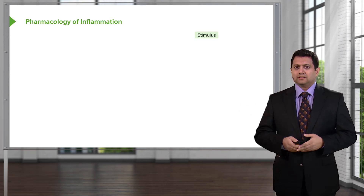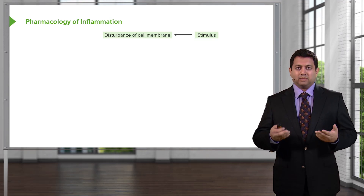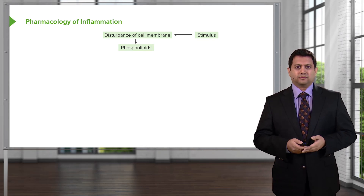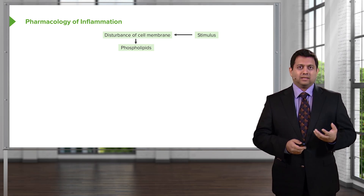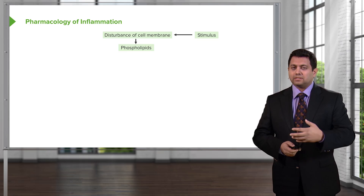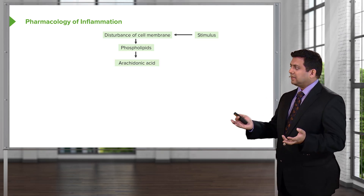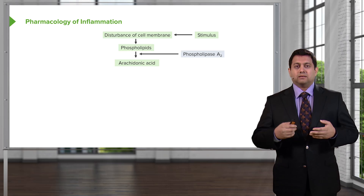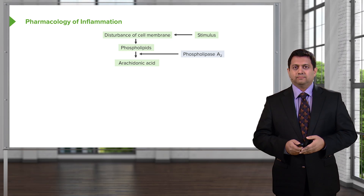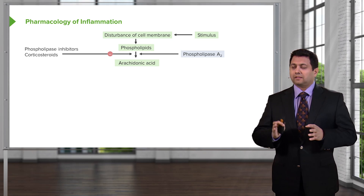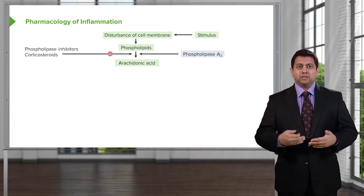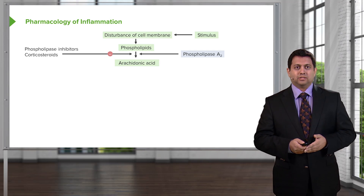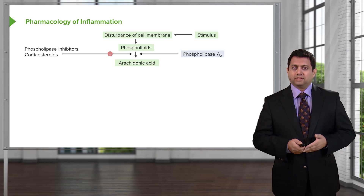Let's start with a stimulus. This stimulus affects the cell membrane and disturbs it somehow. Your cell membrane is made up of a whole bunch of phospholipids. These phospholipids are precursors to many of the signals we have for inflammation. The phospholipids have arachidonic acid enmeshed within them, and this arachidonic acid is broken down by phospholipase A2. The first step we can use to inhibit inflammation is inhibiting that phospholipase A2 — we do that with phospholipase inhibitors and with corticosteroids.